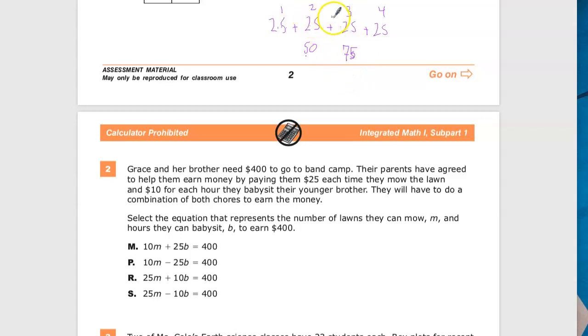So, instead of saying well, 25 plus a bunch of 25s, we'll say 25 times the number of times that they mow the lawn. One of the key things here is to make sure that you get your variables matched correctly to the right number. This is the amount tied to mowing the lawn. The variable tied to mowing the lawn is m. So, I need to have 25m there.